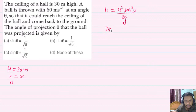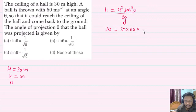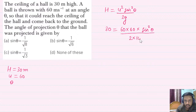H is given as 30. U squared — u is 60, so 60 into 60 into sin squared theta upon 2g, that is 2 into 10.